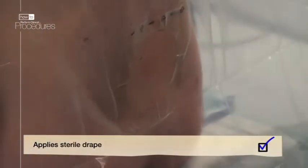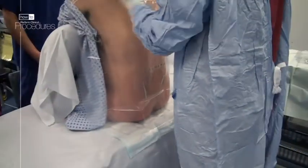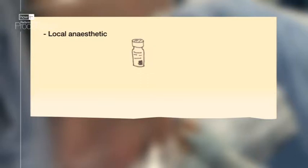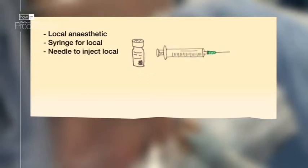Make sure the position is right. Ask the patient to slouch and push the lower back out towards you. You need to make sure you've assembled your equipment before you scrub. You need a few mils of local anaesthetic, such as lidocaine, drawn up in a syringe with a 23g needle mounted on it. You're going to use that to infiltrate the skin.